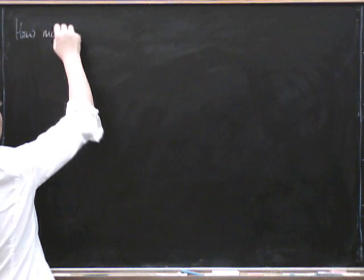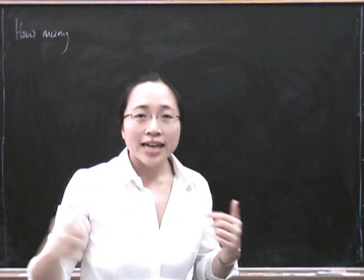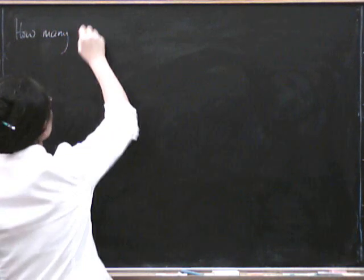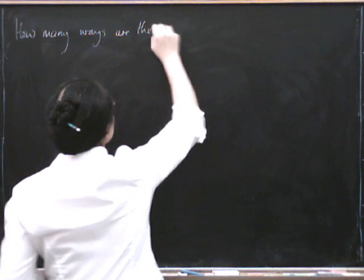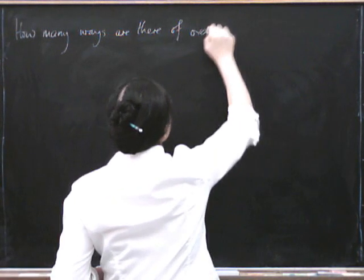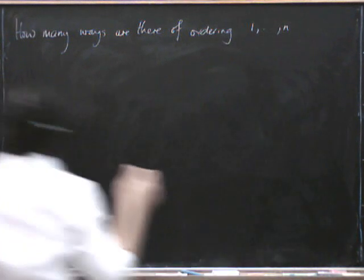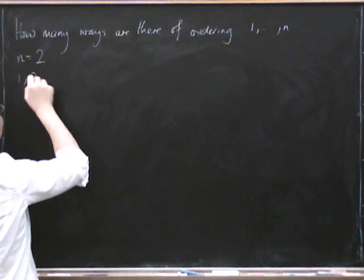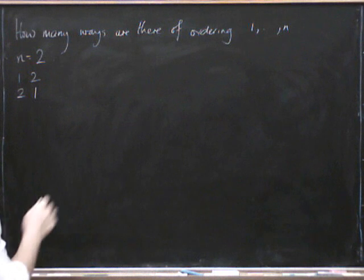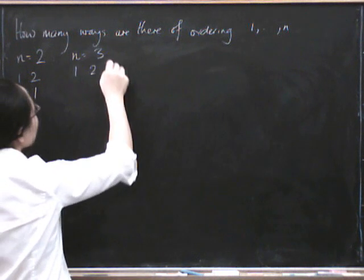Here's an example. How many ways are there of writing the numbers 1 up to n in different orders? How many ways are there of ordering the numbers 1 up to n? So for example, if n equals 2, then we get 1, 2 and 2, 1. If n equals 3, we have 1, 2, 3...